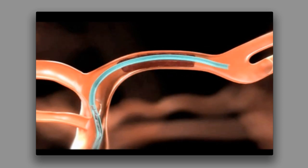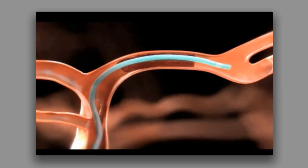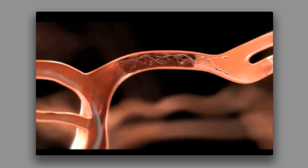The wire is then withdrawn, leaving the catheter in place, and the catheter is used to slowly advance the stroke treatment device into place. With the treatment device across the clot, the catheter is withdrawn, exposing the retrievable stent and allowing it to enmesh the clot.